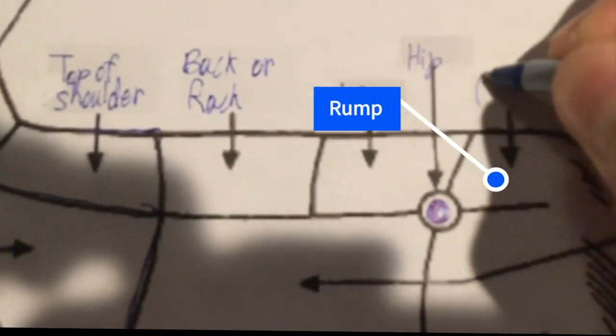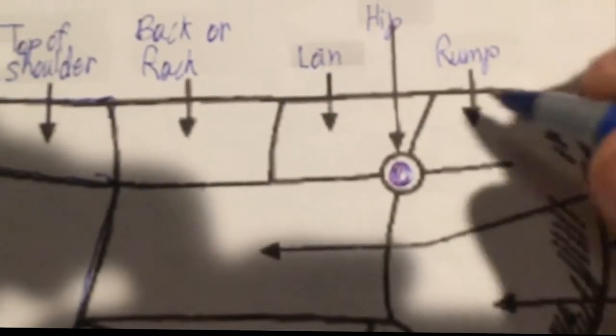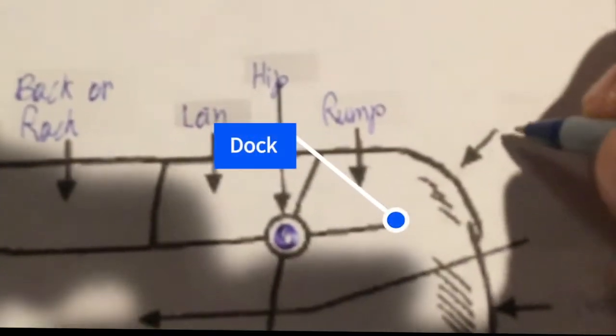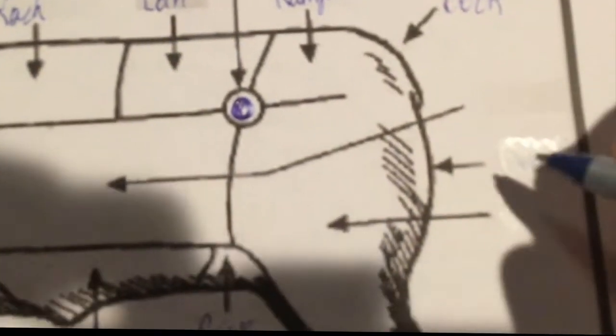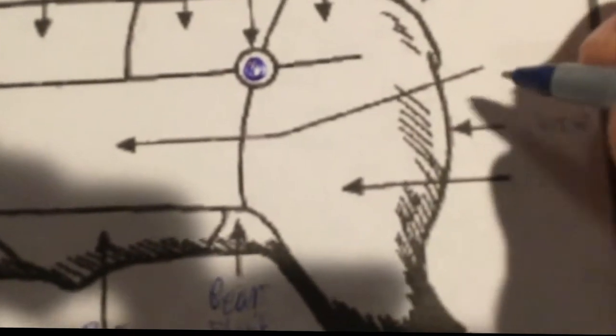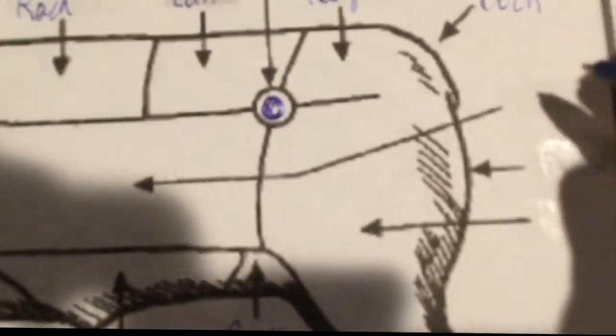Here's the rump, and this section right here. This is the dock, and that's right here where the tail's growing off of.